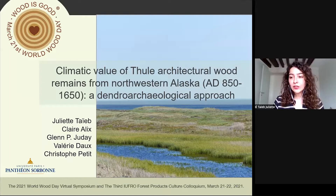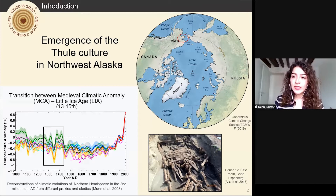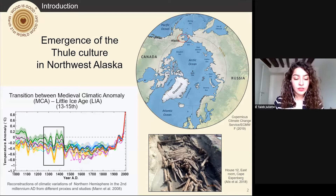My goal is to revisit the climatic framework of the transition of the Medieval Climate Anomaly to the Little Ice Age, a period of major cultural transformation in the region. Northwest Alaska is a key region for understanding settlement dynamics of the beginning of the second millennium AD. During the Medieval Climate Anomaly, 10th to 13th centuries AD, and the transition towards the Little Ice Age, 13th to 15th centuries, the Thule culture, considered as a direct ancestor of today's Inuit, appears along the coast of northwestern Alaska.